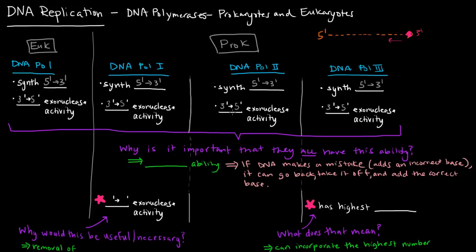So this 3' to 5' exonuclease activity - why is it important that they all have this ability? Well, this ability is the proofreading ability.